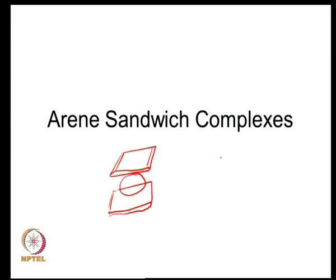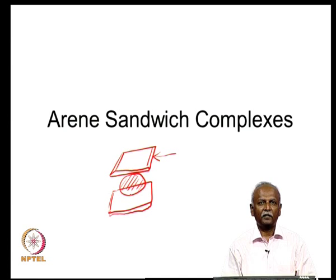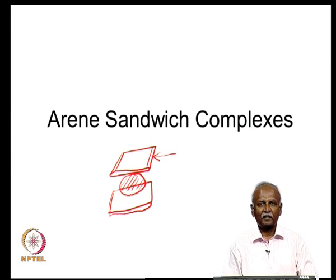In this lecture, we will discuss arene sandwich complexes. The analogy to a sandwich is because an arene ring or a cyclic pi system is a flat object, and between two flat objects you have a metal atom which is sandwiched between them. One often encounters cyclopentadienyl sandwich complexes, and the next most common sandwich complex is the arene complex, where you have a benzene or benzenoid ring sandwiching a metal atom.